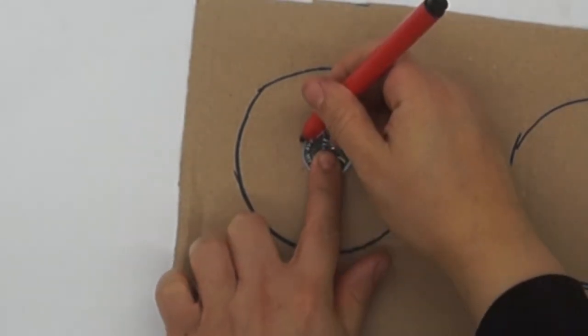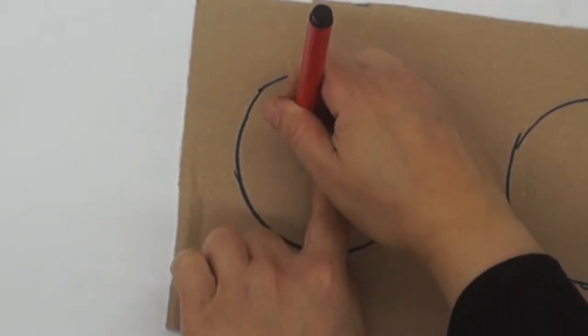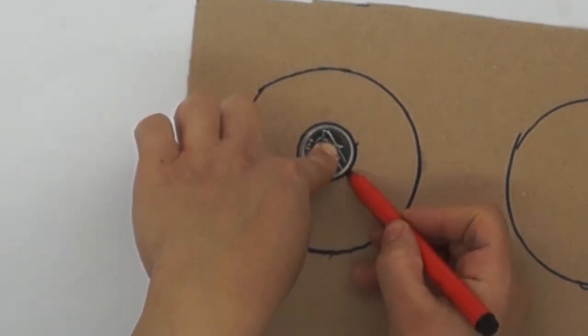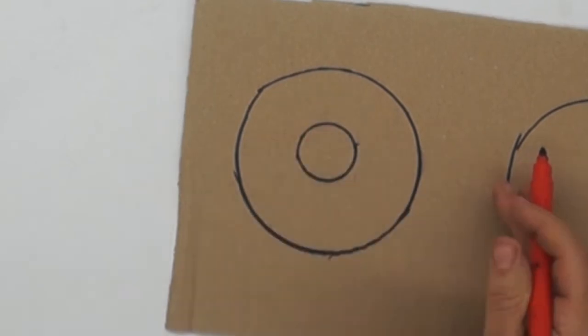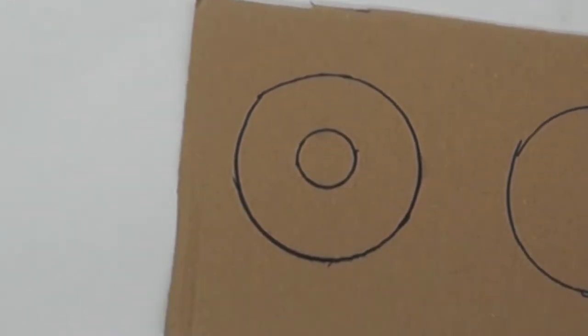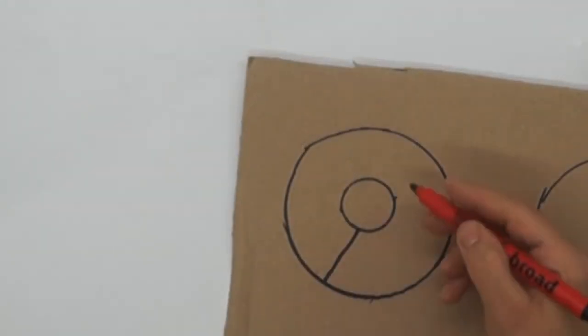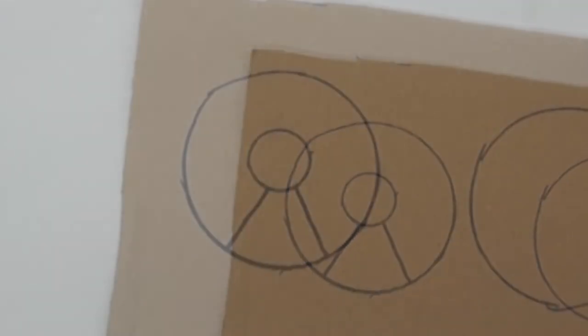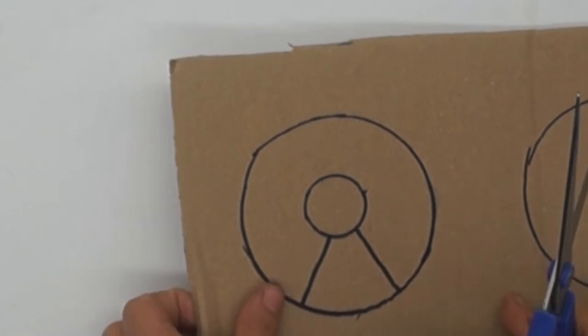So you'll end up with a doughnut shape. I'm going this way and another line like that. Using some scissors, I am going to cut around my circle.